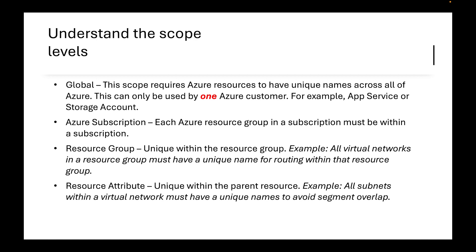Global resources are public-facing, so when setting up web apps, App Services, or storage accounts, you'll have a bit more difficulty with naming — but it can be done. For Azure subscription scope, each resource group in a subscription must be unique within that subscription. You can't have two resource groups with the same name. At the resource group scope, all virtual networks in a resource group must have a unique name for routing within that resource group.